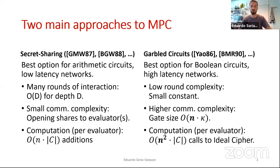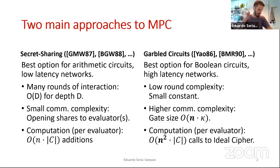Garbled circuit protocols are very good if you want to compute Boolean functions and you are on a high-latency network. You have a constant number of rounds, so latency is not going to kill you. But you have this problem that the size of the gates depends on the number of parties.